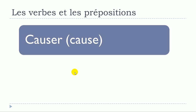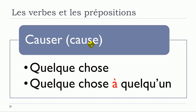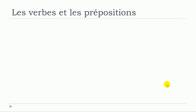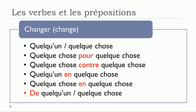Next verb: causer. The translation is quite easy. Causer quelque chose — no preposition. Or causer quelque chose à quelqu'un. It's quite easy, this one.